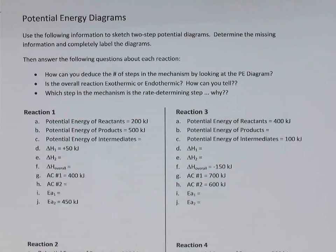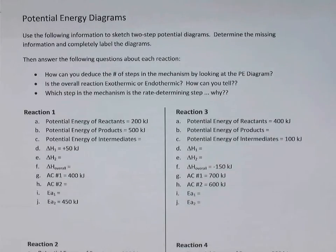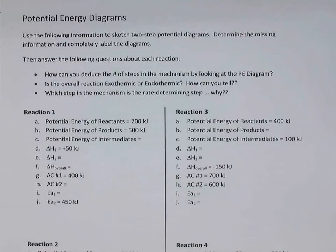In this video, we're going to take a look at potential energy diagrams. We're going to see how to sketch them for two-step processes, focusing on question three. We'll answer a few questions after sketching the diagram: how to tell how many steps were involved in the reaction, whether the reaction is exo- or endothermic, and which step in the mechanism was the rate-determining step.